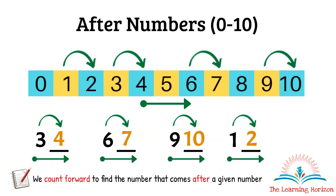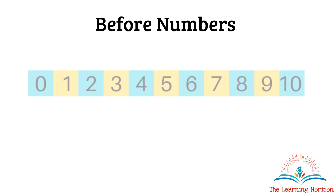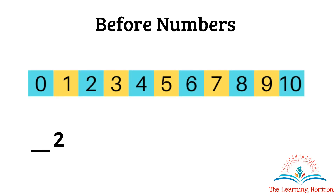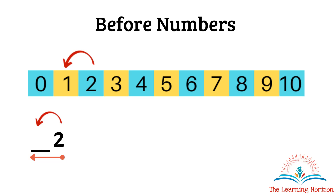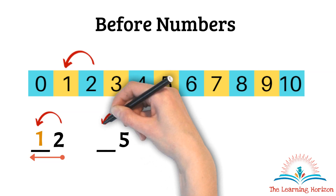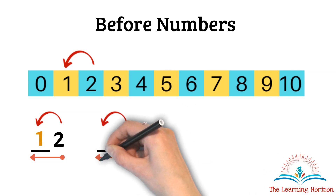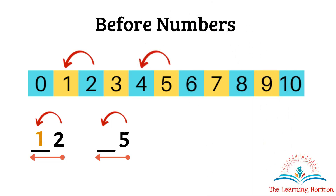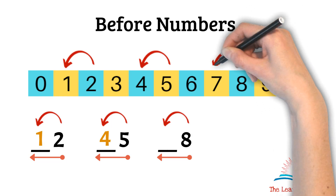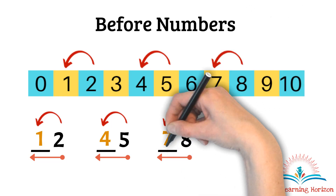Now let us understand the concept of before numbers. Which is the number that comes before 2? I will count backwards to find the number — it is 1. Which is the number that comes before 5? Again I will move backward — it is 4. Which is the number that comes before 8? Moving backward, it is 7.